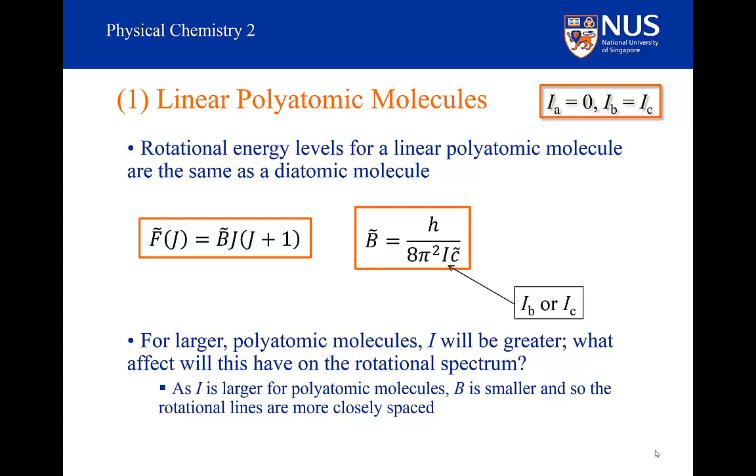And we can rationalize that in exactly the same way as we did for the diatomic systems when we were talking about the effect of centrifugal distortion. Because the spacing of the energy levels is related to the size of the molecule, this is exactly the same as when we discussed the particle in a box system. The larger the box, the closer the energy levels. In this system, the rotational wave function can spread over a much larger region, and so the energies are going to be smaller and the energy levels are going to be closer together.